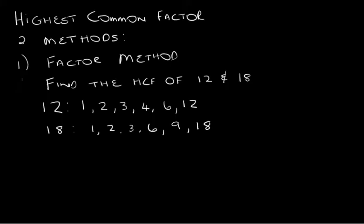And the factors of 18 are 1, 2, 3, 6, 9 and 18. What do you see? You see that 1 is common, 2 is common, 3 is common, but we are looking for the highest common one. And the highest common one is 6. So the highest common factor here is 6.